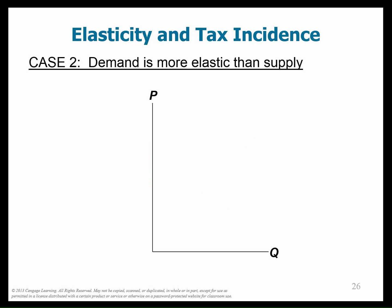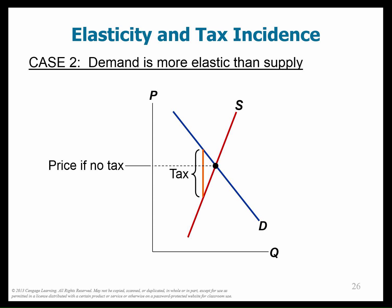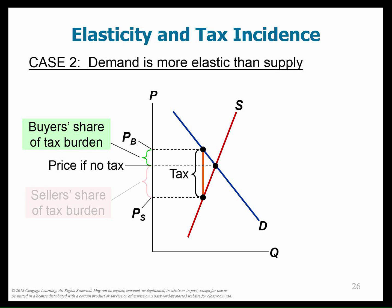Now let's think about demand being more elastic than supply. We have a steep inelastic supply curve. The tax burden is now more on the seller. The person with the inelastic curve — whichever is more vertical — gets hurt more by the tax and bears more tax incidence.